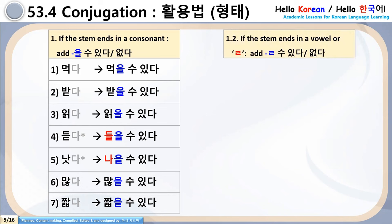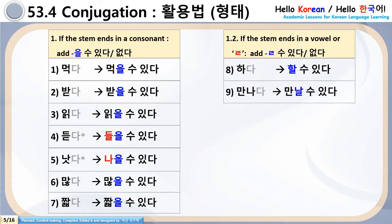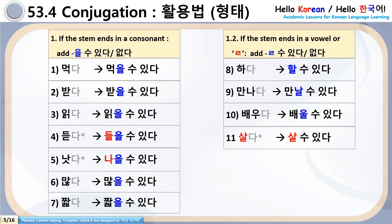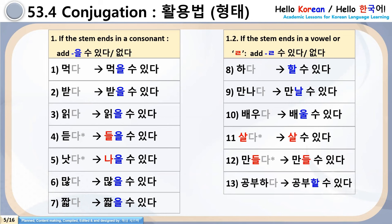For the next category: if the stem ends in a vowel or Luh-pachim, we simply add Luhsu Itta or Akta. Number 8: Hada → Halsu Itta. Number 9: Mannada → Mannal Su Itta. Number 10: Phevuda → Phevul Su Itta. Number 11: Salda → Salsu Itta — note the Love-pachim, so just add Su Itta. Number 12: Mandal Da → Mandal Su Itta. Number 13: Humbu Ha Da → Humbu Haal Su Itta. Number 14: Yappu Da → Yappul Su Itta. Please make this table once in your notebooks.